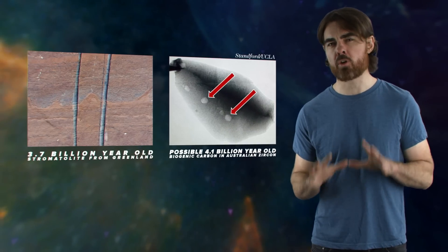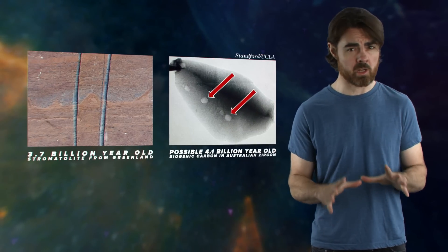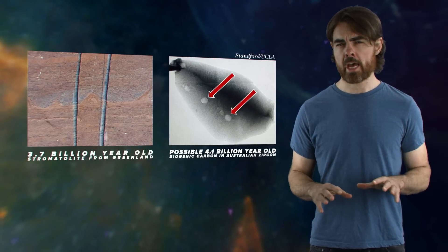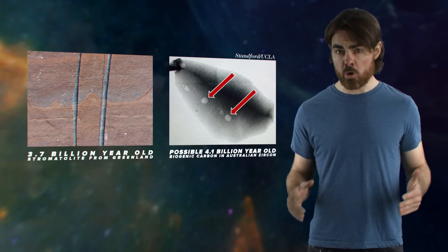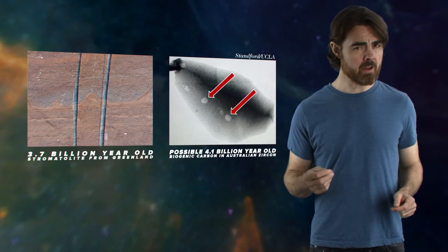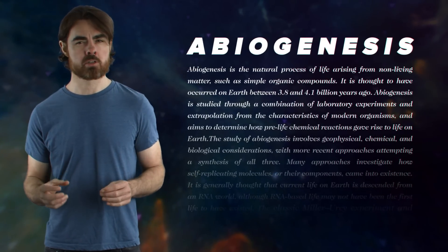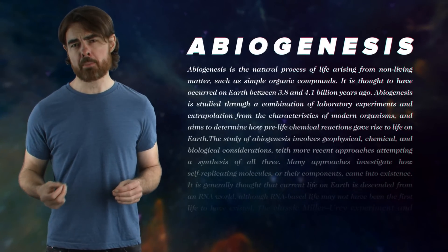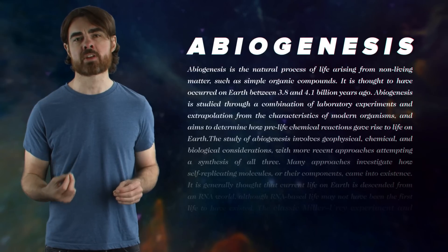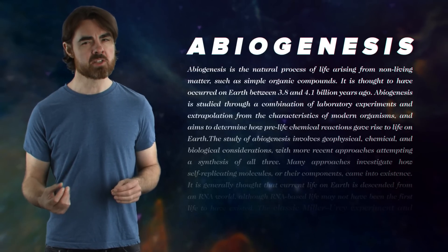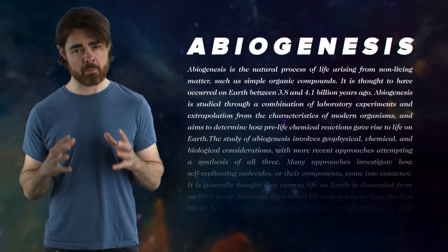In the last 50 years, we've learned a lot more about some of Drake's factors. There's some progress with the biological factors as we push the fossil record back closer and closer to the formation of the Earth, and we see just how quickly life arose here. We also have a slightly better understanding of abiogenesis, the initial evolution of life, and perhaps even the subsequent evolution of intelligence, although these are still a long way off giving us hard numbers.